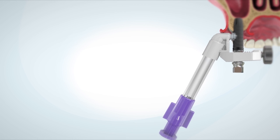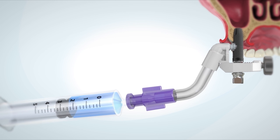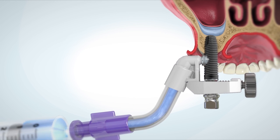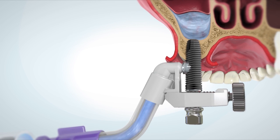Take the saline syringe from the product kit and attach it to the connector. Inject two cc's of saline solution through the implant and into the sinus, hydraulically separating the schneiderian membrane from the sinus floor.